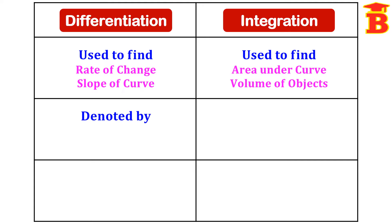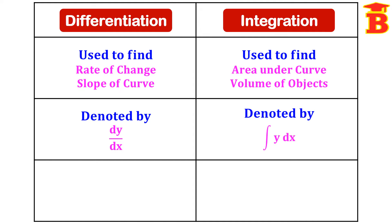Differentiation is denoted by dy/dx — that means the difference in y with respect to the difference in x, i.e., the change in variable y with respect to the change in variable x. Whereas integration is denoted by the integral symbol: integral of y dx, meaning we are integrating the variable y with respect to the variable x.